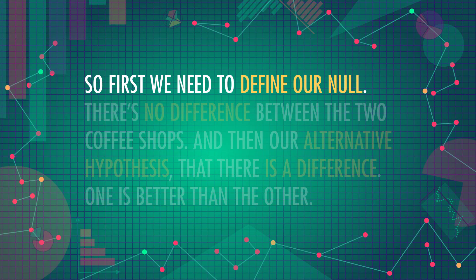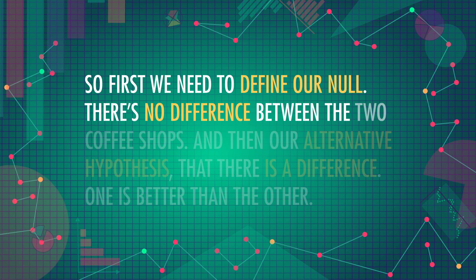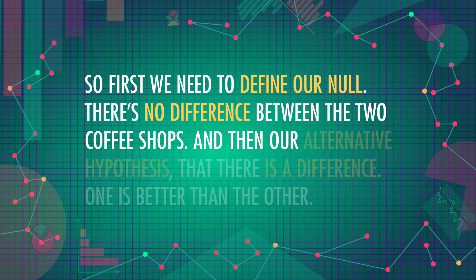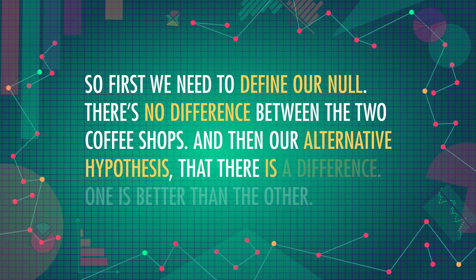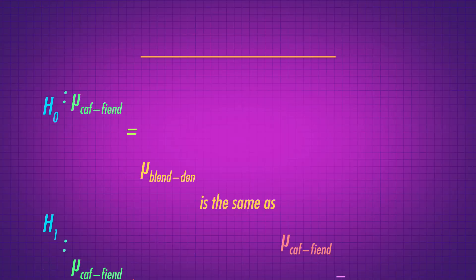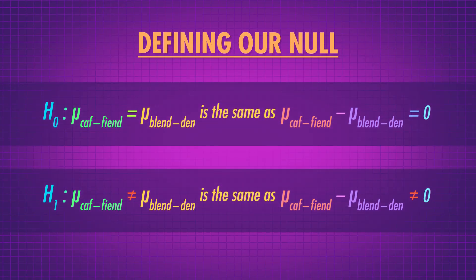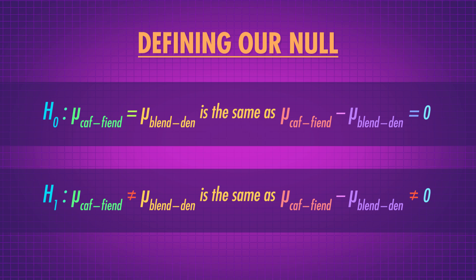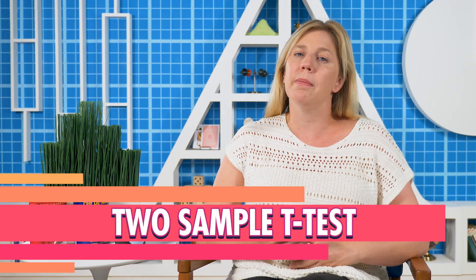So first we need to define our null: there's no difference between the two coffee shops. And then our alternative hypothesis: that there is a difference — one is better than the other. In this case, we're interested in whether the mean scores for coffee are different between Caffeined and The Blend In. With a little algebra, we can see that this is the same as asking whether the difference between the two means is not zero. Now that we have our hypotheses, we can do a t-test — specifically, a two-sample t-test, also called an independent or unpaired t-test.